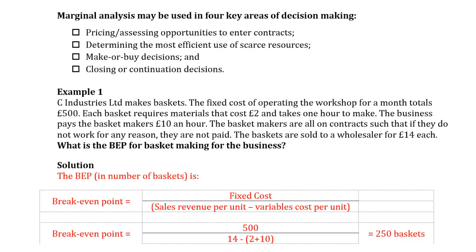Let's remember that in chapter 2 where we discussed relevant costs for decision making, we saw that when deciding between two or more possible courses of action, only costs that vary with the decision should be included in the analysis — so only a relevant cost.